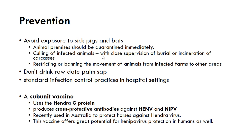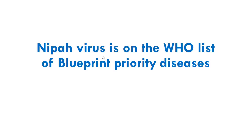A subunit vaccine has been developed and used in Australia, which uses a Hendra G protein and produces cross-reactive antibodies against both Hendra virus and Nipah virus, showing good potential against Henipavirus group. Nipah virus is on the WHO list of blueprint priority diseases, so awareness and proper standard infection control practices are essential.